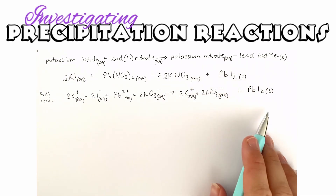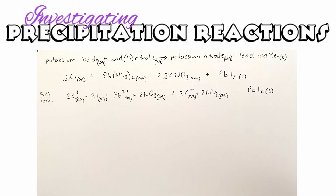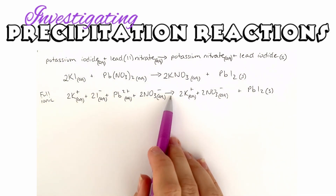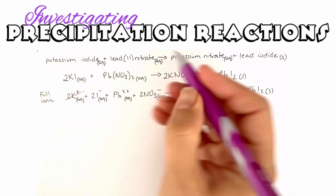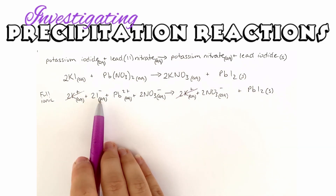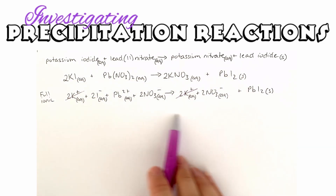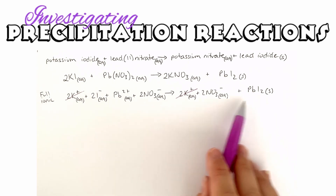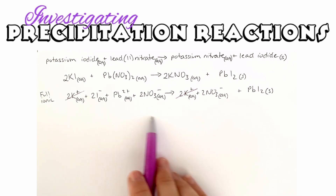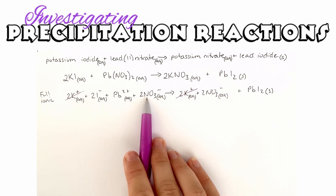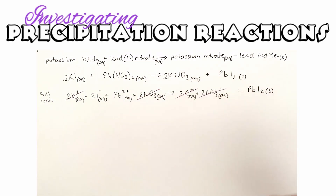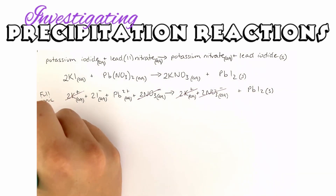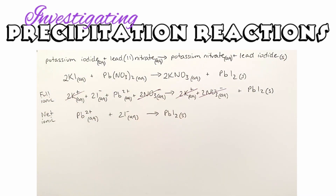Now we have our full ionic equation and we want to identify the spectator ions by comparing across the arrow. Potassium is aqueous on both sides — exactly the same — so it's a spectator ion. Iodide changes from aqueous to solid, so it participates. Lead goes from aqueous to solid, so it participates. The 2 NO₃⁻ ions are aqueous and exactly the same on both sides — also spectator ions. Removing the spectators gives us our net ionic equation for this reaction.